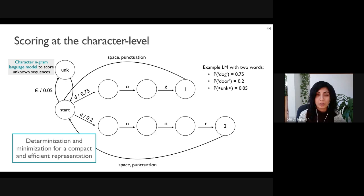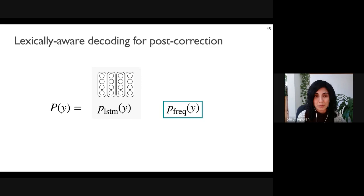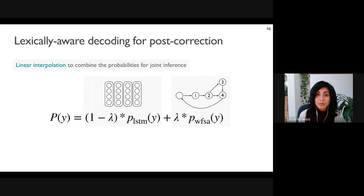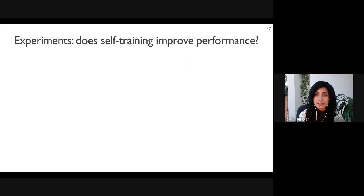Coming back to our lexically-aware decoding formulation: the next character probability is determined by the decoder LSTM and a frequency-based probability — simply the transition score from the current WFSA state for that character. We use simple linear interpolation to combine the probabilities, weighted by a tunable hyperparameter. Using the WFSA representation gives a simple and effective way to do joint inference with a character-level neural decoder and a word-level count-based language model. Overall, our semi-supervised model uses the labeled data to train a baseline post-correction model, while using the unlabeled data for self-training and lexically-aware decoding.